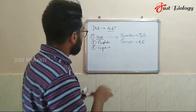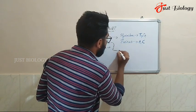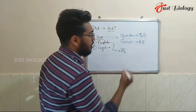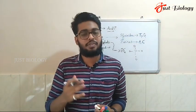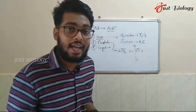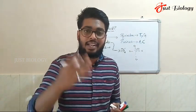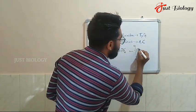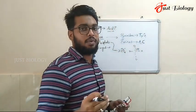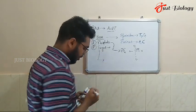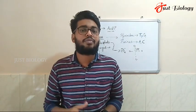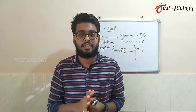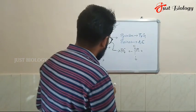Now look at the phosphate molecule. This phosphate molecule carries a PO4 minus charge. The negative charge of DNA is given by the phosphate, because phosphate carries a negative charge — that is why DNA possesses a negative charge overall. Then there is the sugar, the third important component of DNA. If you look at the structure of sugar, you can see a five-carbon ring, which is called a pentose sugar.